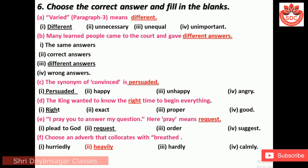Question 6: Choose the correct answer and fill in the blanks. 'Varied' in paragraph three means different. Many learned people came to the court and gave different answers. The synonym of 'convinced' is 'persuaded.' D. The king wanted to know the right time to begin everything. E. 'I pray you to answer my question' — here 'pray' means 'request.' F. Choose an adverb that collocates with 'breath' — the adverb is 'heavily.'